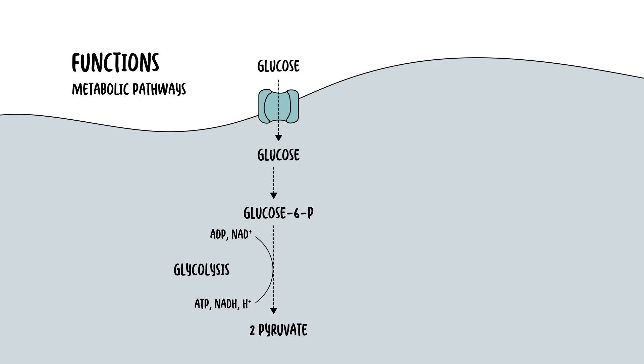It also hosts portions of other metabolic pathways, including gluconeogenesis, making glucose, particularly in the liver, and the pentose phosphate pathway, which plays an important role for structures in the genome.